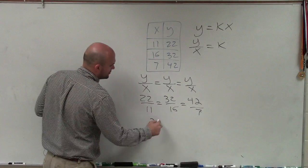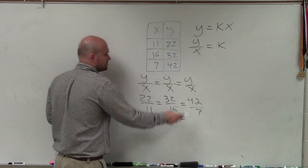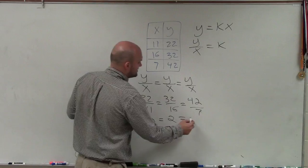Well, 22 divided by 11 is 2, which equals 32 divided by 16, which is 2. But 42 divided by 7 does not equal 2. 42 divided by 7 equals 6.